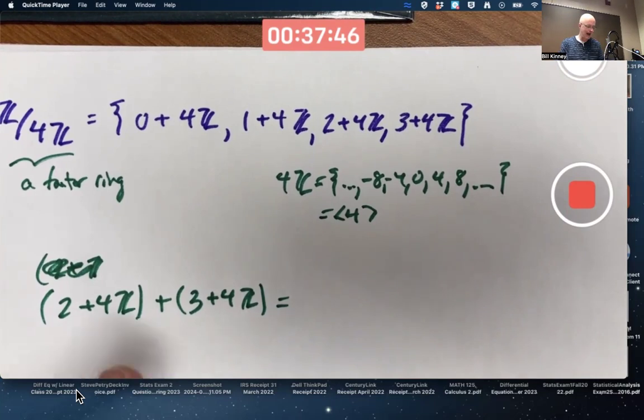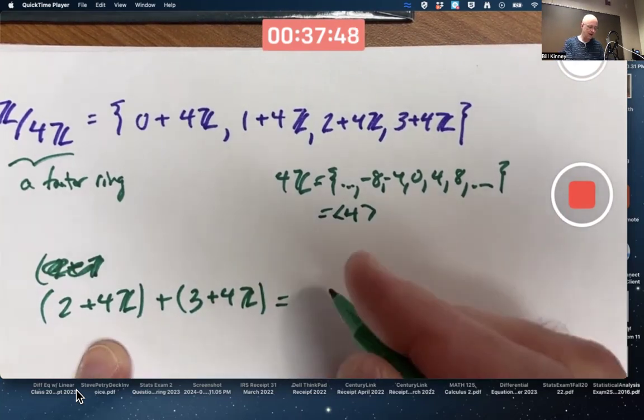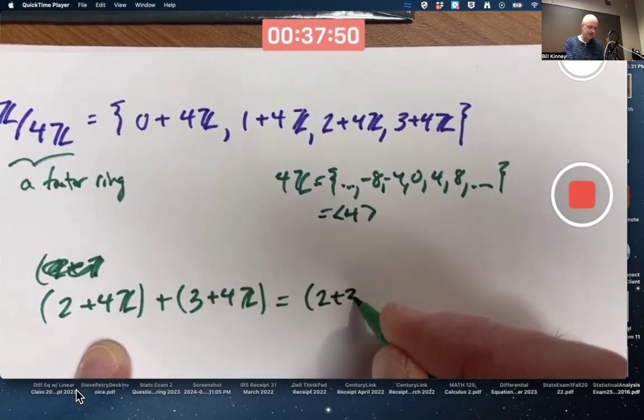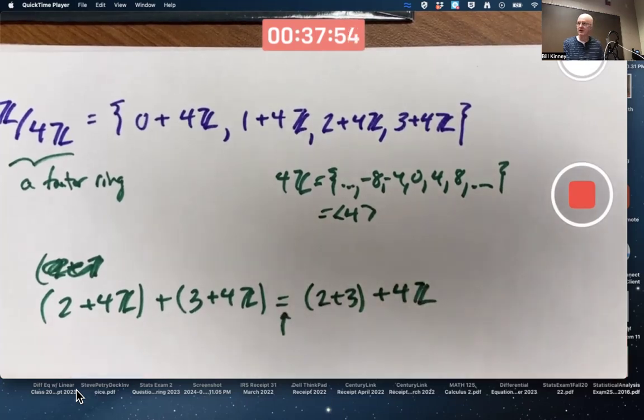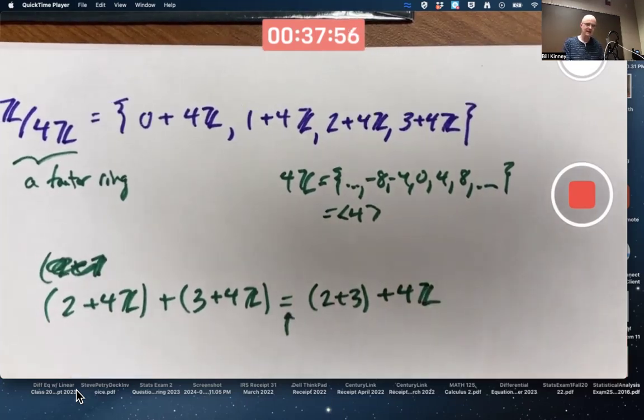You add cosets by adding their representatives. That's the definition of the group operation in this factor ring.